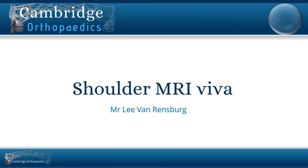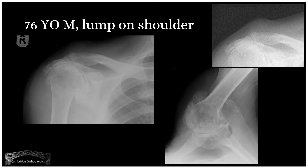Shoulder MRI cases for the FRCS. A 76-year-old male presents with a lump on the shoulder. You see it best on the soft tissue image on the top right-hand side. What other features do you see on this x-ray?